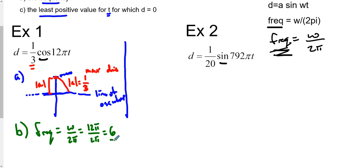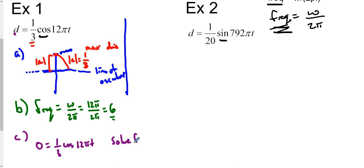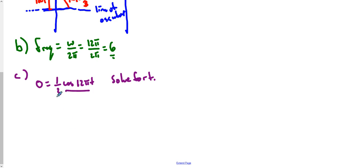Now for part C, this is probably the most difficult one. It says: what is the least positive value for T for which D equals 0? In order to figure this out, we set up an equation where our D value equals 0. So we plug that in: 0 equals one-third cosine of 12πT. We want to solve for T, so we get cosine by itself — multiply both sides by 3 — and we have 0 equals cosine of 12πT.